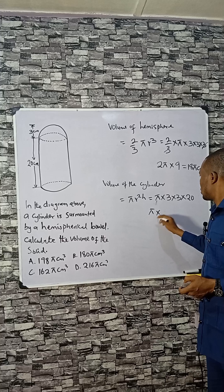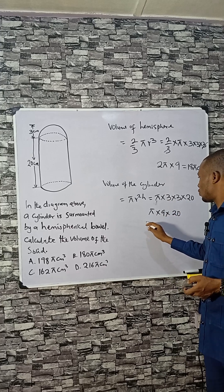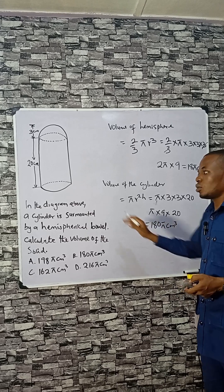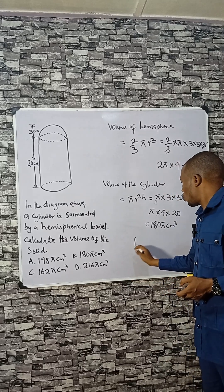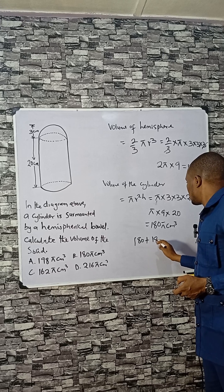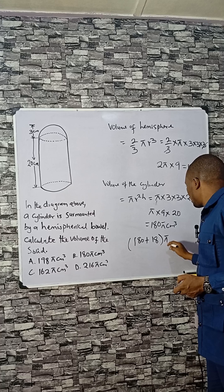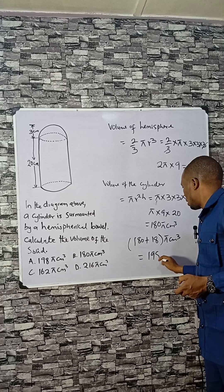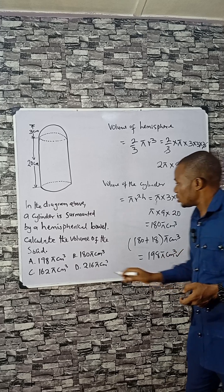So we have pi times 3 times 3, which is 9, times 20. This gives 180 pi cm cubed. The total volume of the solid is 180 pi plus 18 pi, which equals 198 pi cm cubed. The answer is 198 pi cm cubed.